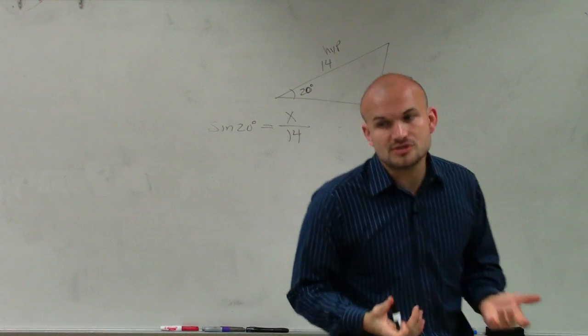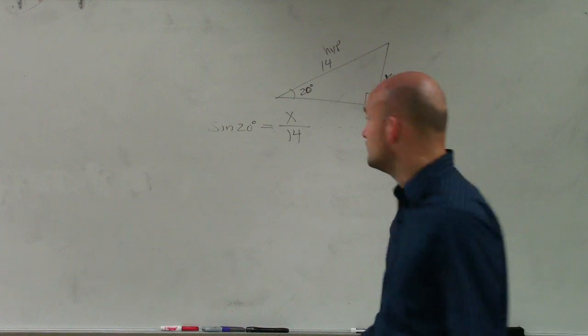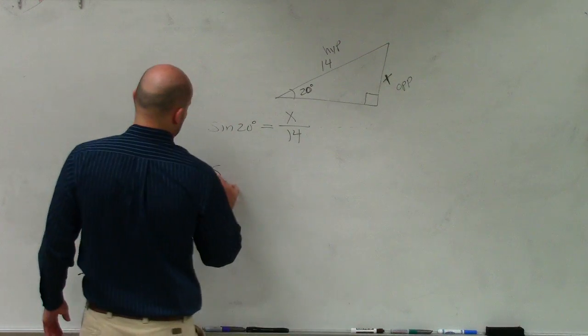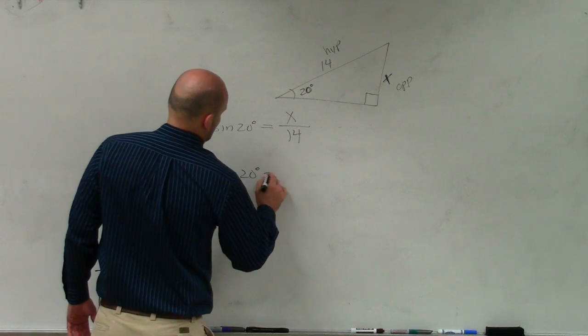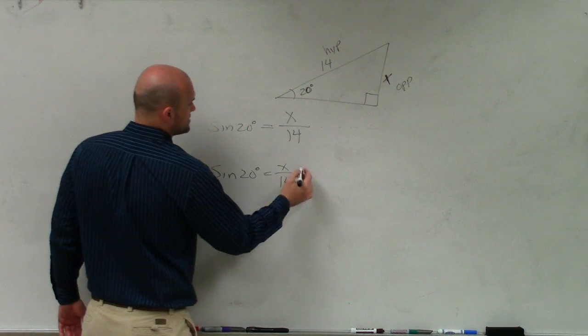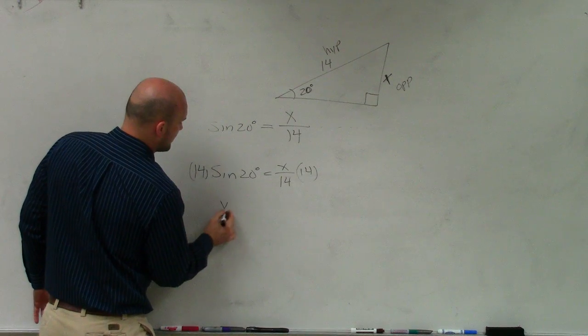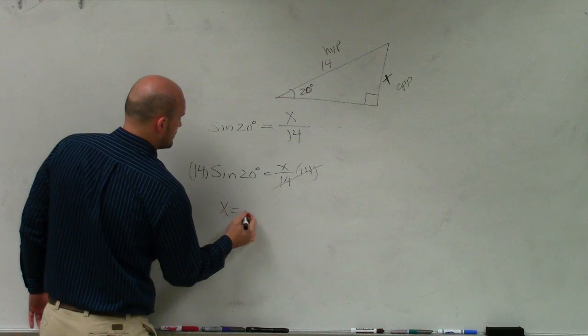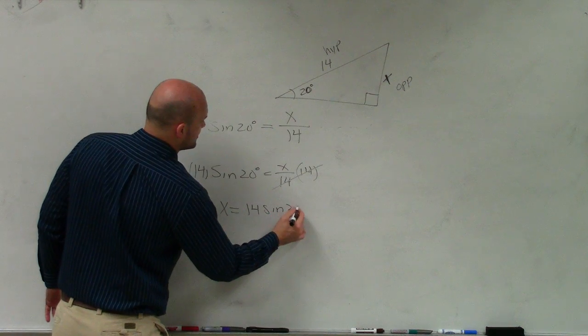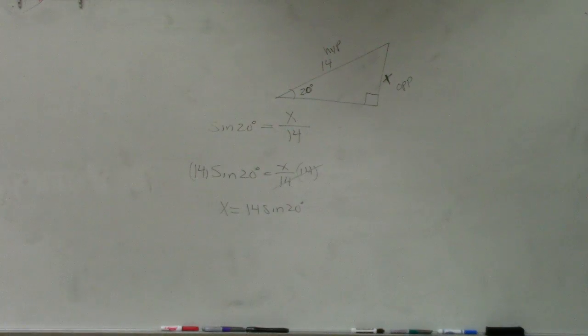Now, how do we go and solve this? Well, ladies and gentlemen, we solve this just like we solve for x. Get the x by itself. So to do that, I multiply by 14 on both sides. And therefore, x equals 14 times the sine of 20 degrees.